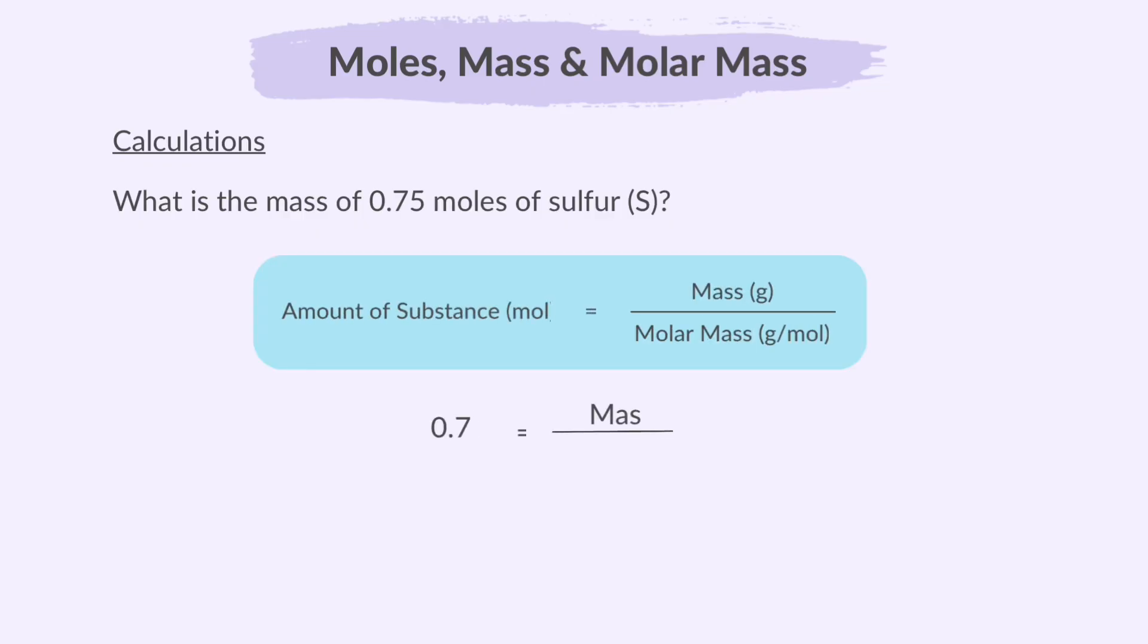We substitute the number of moles and the molar mass, in this case the relative atomic mass of sulfur, to the formula: amount of substance equals mass over molar mass. Mass is equal to 0.75 multiplied by 32, because we make mass the subject of the formula by multiplying both sides by 32. This is equal to 24 grams of sulfur.